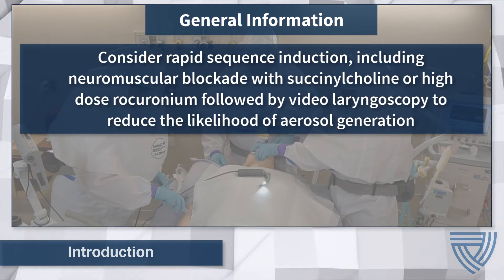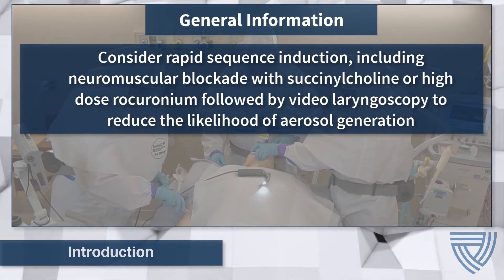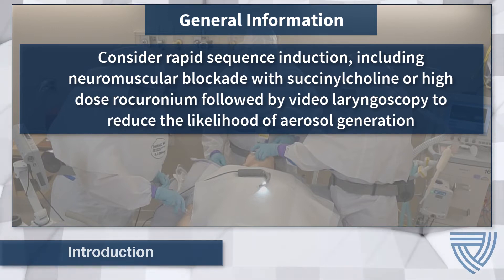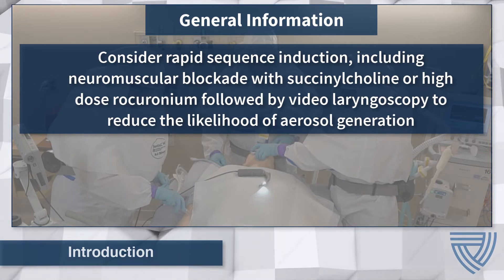Consider the use of rapid sequence induction, including neuromuscular blockade with succinylcholine or high-dose rocuronium, followed by videolaryngoscopy, to reduce the likelihood of aerosol generation through coughing or vomiting. The additional use of videolaryngoscopy will allow the operator to position themselves away from the patient, keeping their head further away from potential aerosolizations.